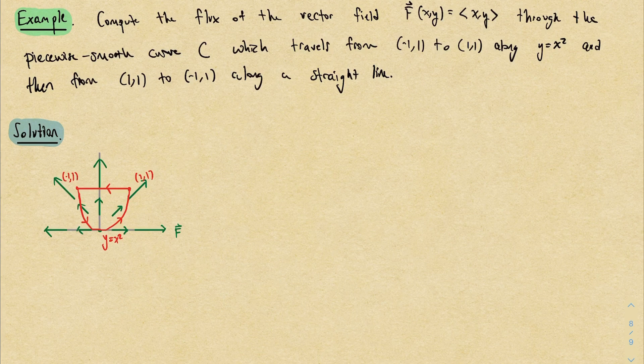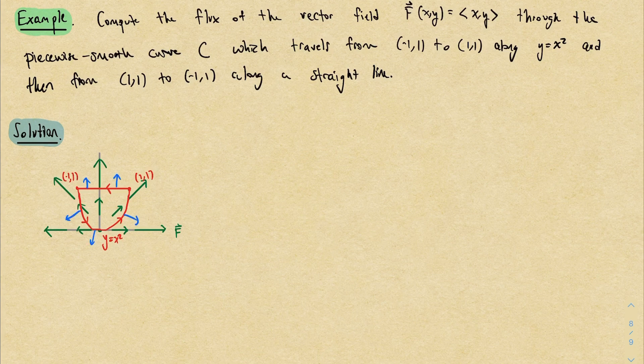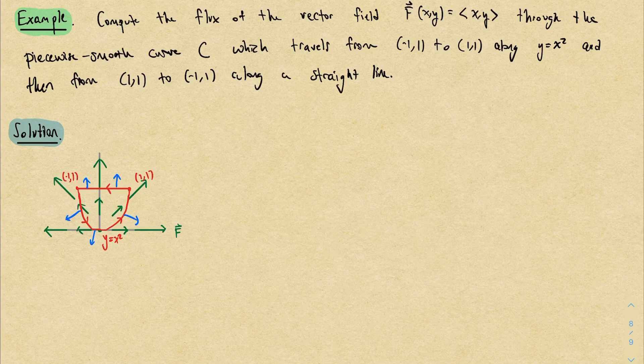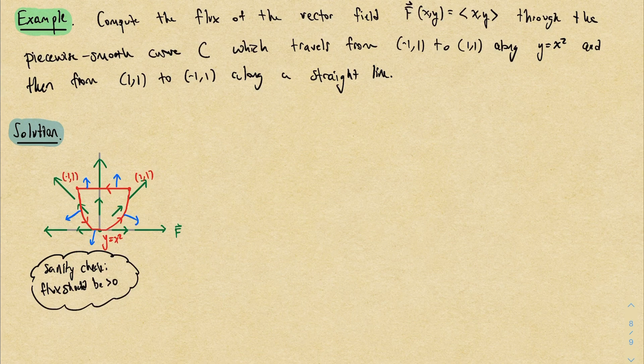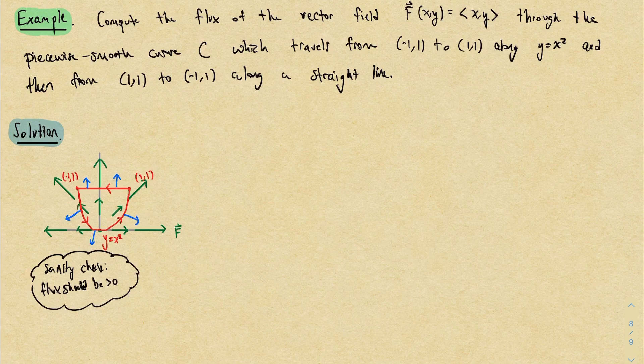Now just as a sanity check to make sure that we understand what's going on, if I draw the normal vectors in here, because I'm traveling this way along the curve, and I want the normal vectors to be to my right, the normal vectors would look something like this. And by just eyeballing the blue vectors against the green vectors, I can see that for the most part, they're traveling in the same direction. More specifically, I can see that the dot product of most of these vectors is positive. So it seems like at the end of the day, we should get a flux which is positive. The vector field is moving through the curve in a positive manner, whatever that means.